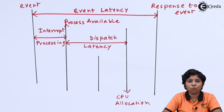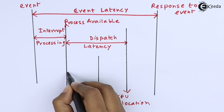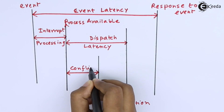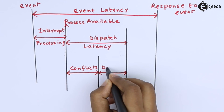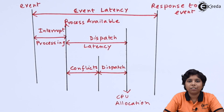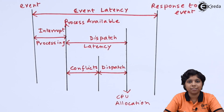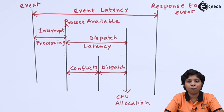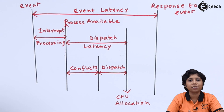Dispatch latency has two phases. The first is the conflict phase, which involves two functions: preemption of any process running in the kernel by a high-priority process, and the release of resources by low-priority processes that are needed by a high-priority process. After the conflict phase is resolved, the actual dispatching is done by the dispatcher, which allocates the CPU to the process, completing the real-time scheduling.